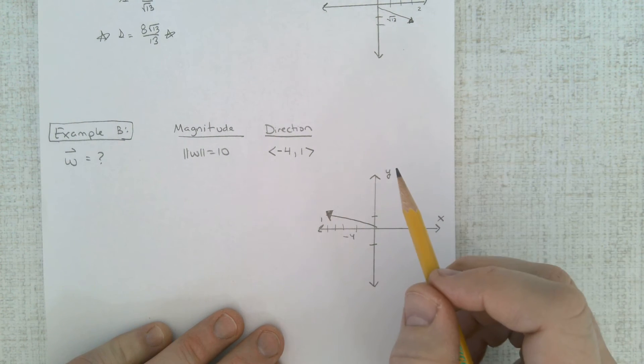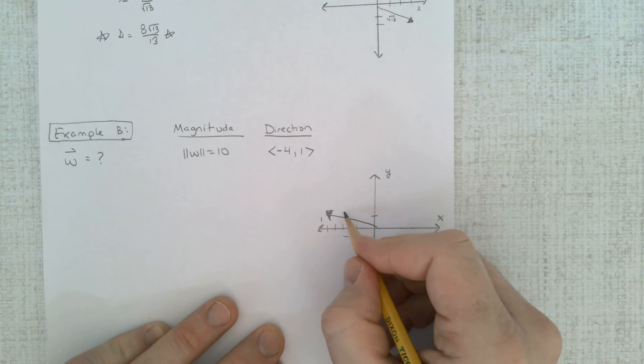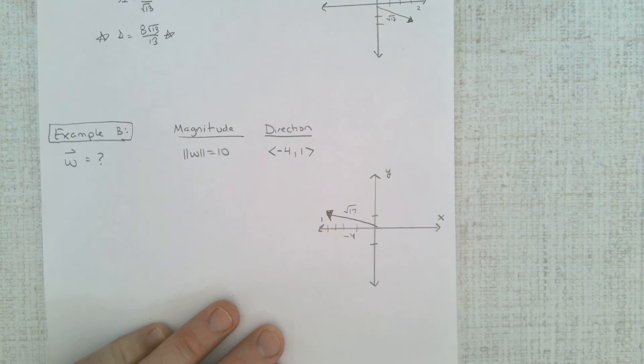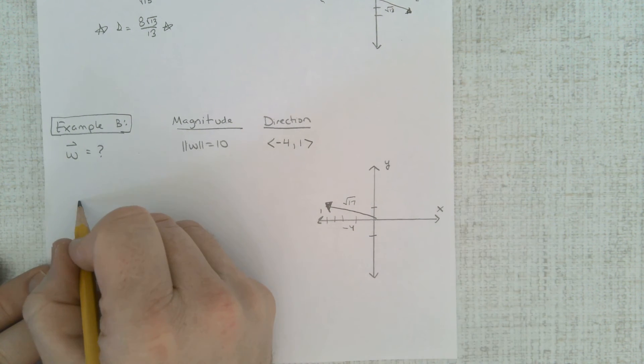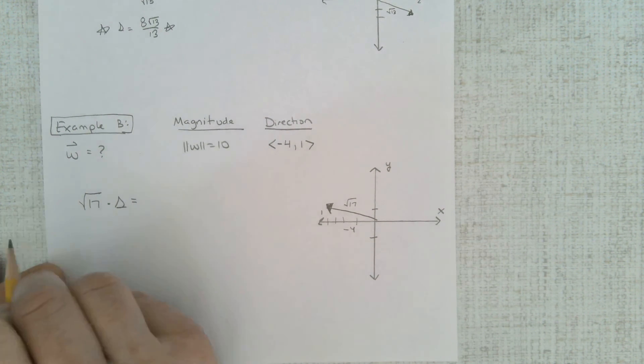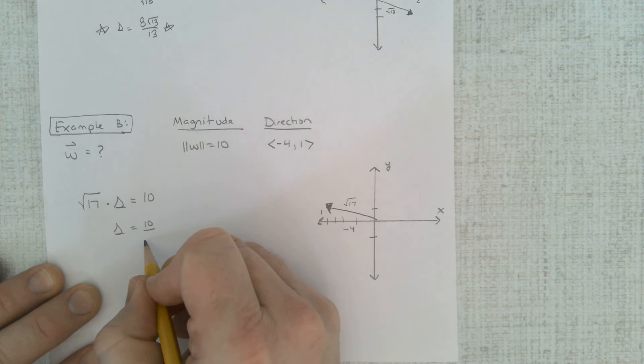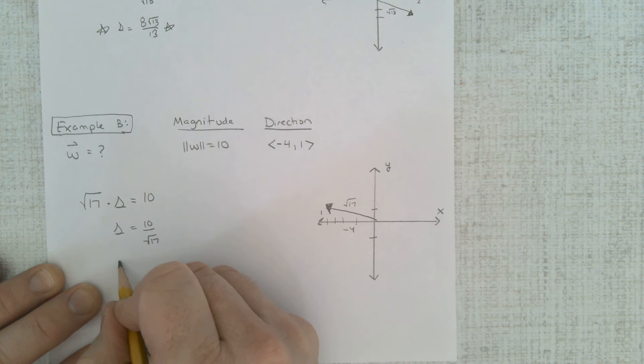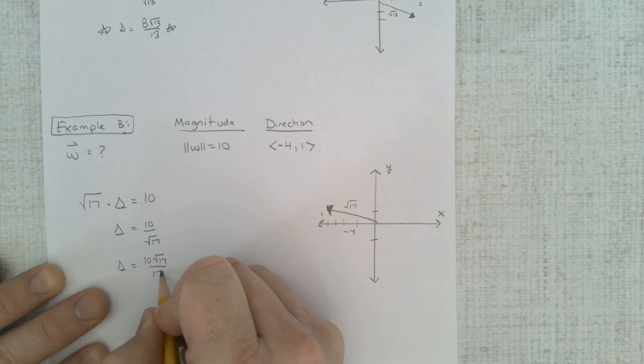a squared plus b squared equals c squared, that would be 16 plus 1 is root 17, that's the distance. Do I want to take that root 17, multiply it by some scalar and turn it into 10? Well, that's what I'm multiplying it by, that crazy number right there. Let's clean this number up: 10 root 17 over 17.